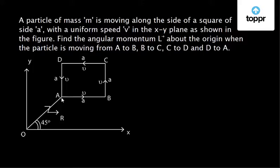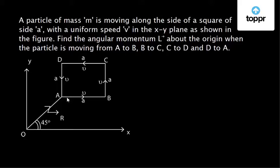In the figure, the particle is moving from A to B, B to C, C to D, and D to A in an anti-clockwise direction. The distance of A from O is r, and OA is at an angle of 45 degrees with the x-axis. The length of each side of the square is a, and the particle is moving with speed v at all times.